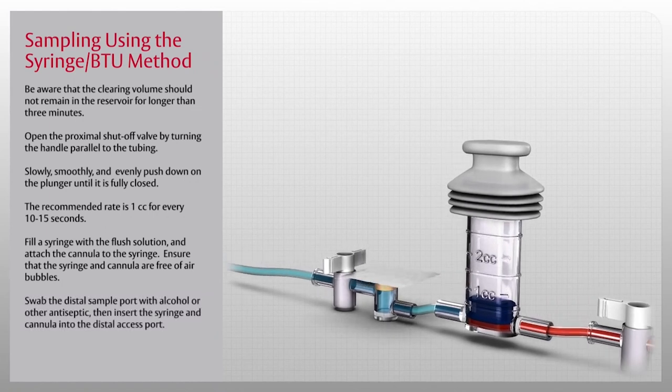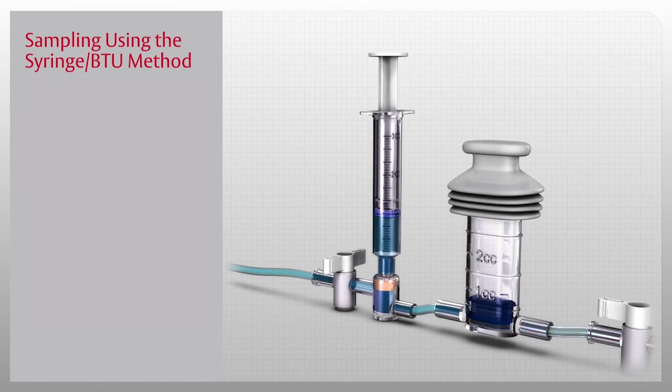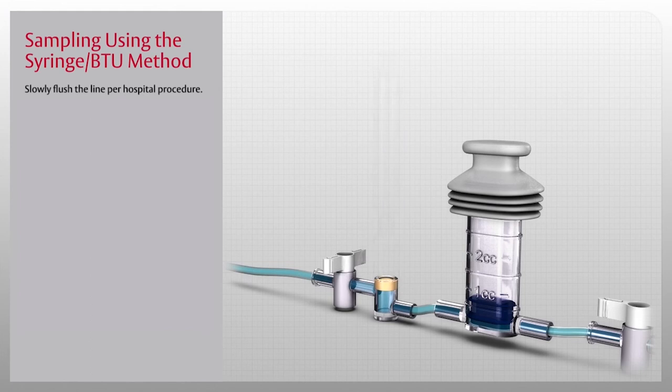Swab the distal sample port with alcohol or other antiseptic, then insert the syringe and cannula into the distal access port. Slowly flush the line per hospital procedure.